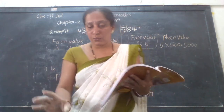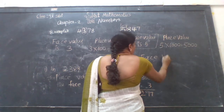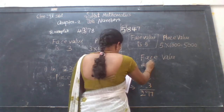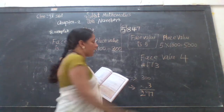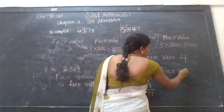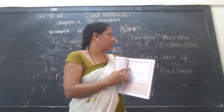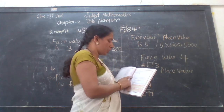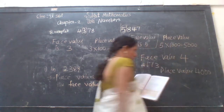The face value of 4 is 4. So don't get confused between face value and place value. We have to see the number and consider the position. The position value — if the digit is in the thousands place, the place value is 4,000.